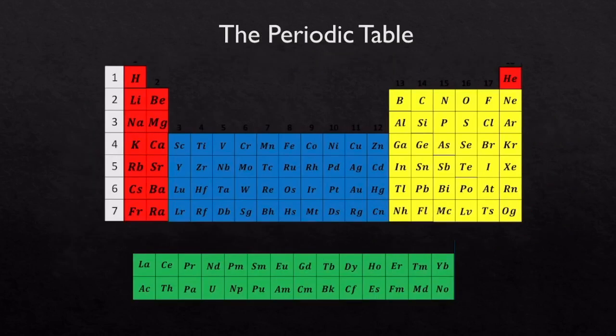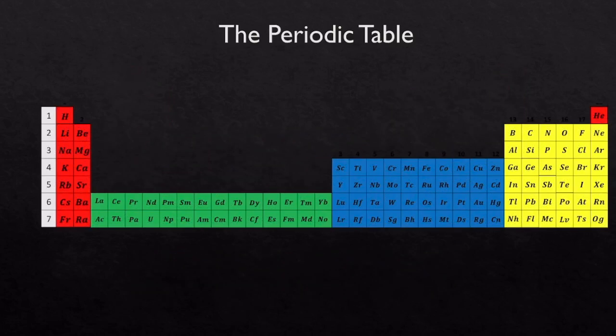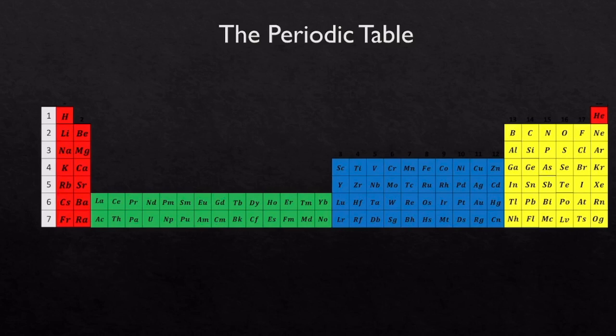The periodic table you're used to seeing has two parts — the main table up top with the red, blue, and yellow sections, and a little island of elements at the bottom. In reality, if we could print the periodic table on a longer piece of paper, we'd be able to display it in an extended format. But on a normal piece of paper it would be too small. So for a lot of slides in this unit, the periodic table will be shown in the extended format.